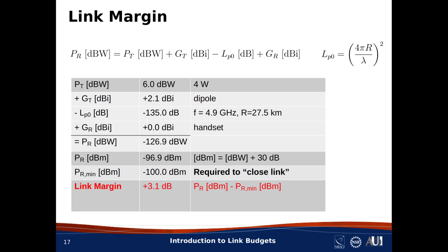If the link margin had been less than 0 dB, then the link would not be closed, suggesting that we might not be able to operate on this link. The degree to which the link margin is greater than 0 dB is an indication of reliability. For example, if the link margin were 20 dB, and there was no factor that was likely to be less than the computed value by 20 dB, then we would feel pretty confident that the link will remain closed, even if one of our calculations turns out to be optimistic. In other words, greater link margin means greater reliability.